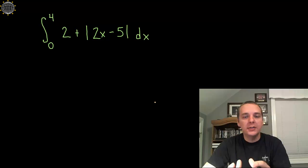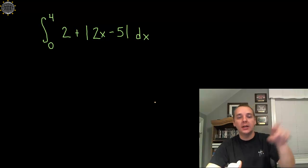Now in an earlier video we already discussed how to do definite integrals with absolute value functions. Basically if the vertex of that absolute value function, which these guys do have a vertex, they kind of have a V shape.